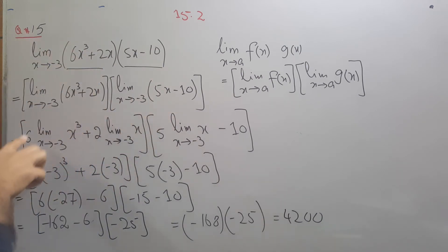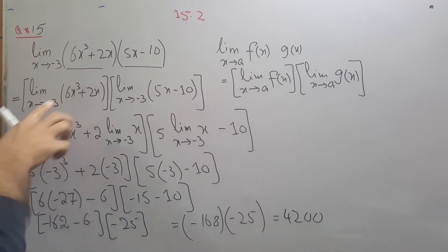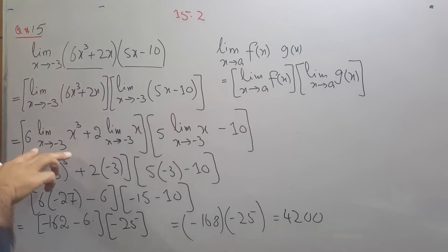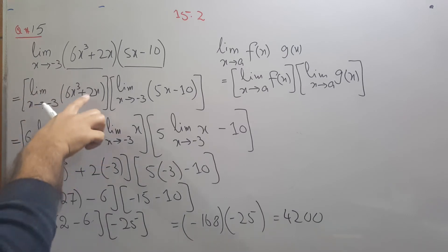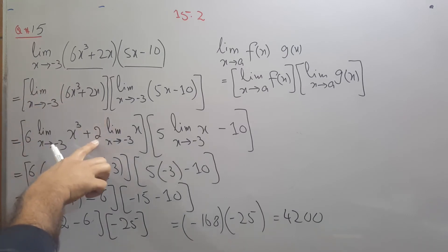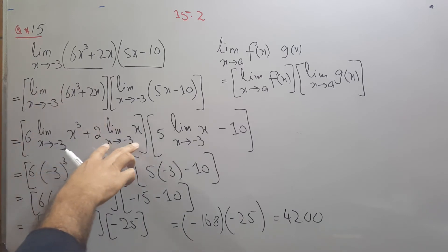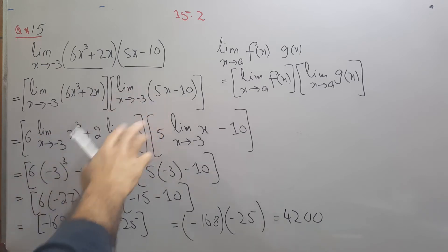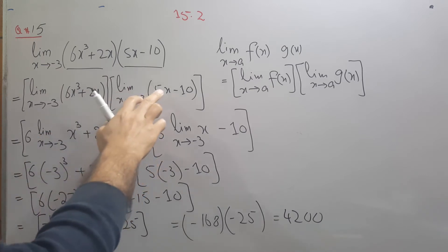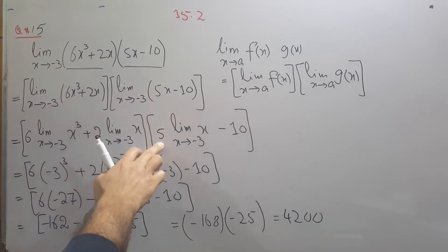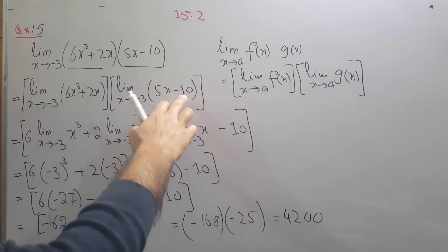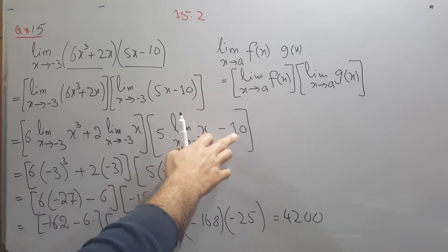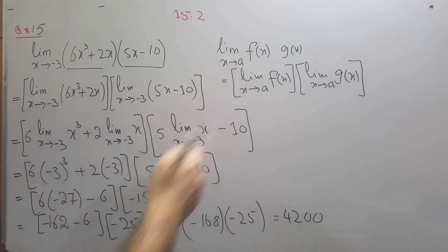Using the constant rule: 6 comes in front and we apply the limit on x cubed; 2 comes in front and we apply the limit on x; then for the second function, 5 comes in front and we apply the limit on x; minus 10 is a constant so the limit of a constant is the same constant.